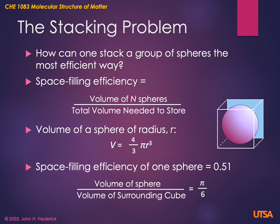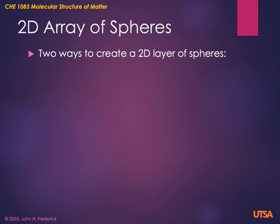Now, 0.51 is not a very efficient space-filling efficiency, simply because it would take twice as much space to store some number of basketballs than the basketballs actually take up. Let's now look at what happens when we bring more than one sphere together. I'm going to skip over a linear array and go right to two-dimensional arrays of spheres, and figure out what is the best way to pack those together.